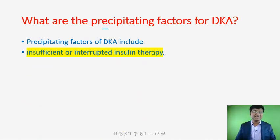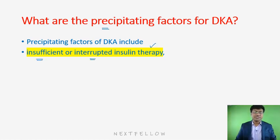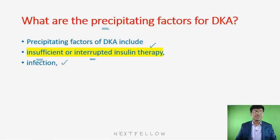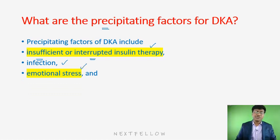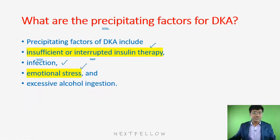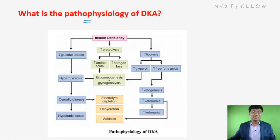The precipitating factors for the development of diabetic ketoacidosis include: number one, insulin insufficiency — insufficient or interrupted insulin therapy can cause DKA; infections such as respiratory tract infections like pneumonia or urinary tract infections; emotional stress; and excessive alcohol ingestion.